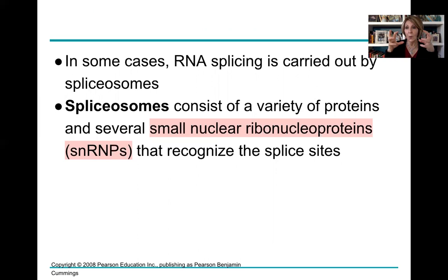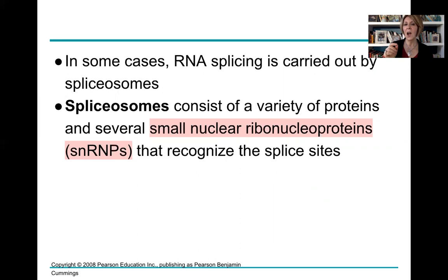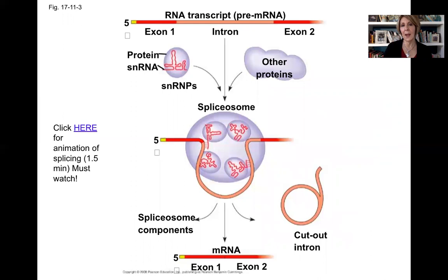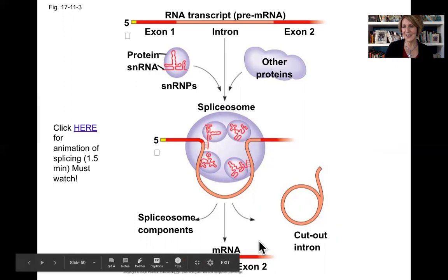RNA splicing is carried out by a large molecular machine called a spliceosome. A spliceosome is a hybrid of many proteins and special small nuclear ribonuclear proteins, or SNRPs/SNRNPs, that recognize the splice sites on the messenger RNA. The spliceosome cuts out the introns and splices together the exons, which are then expressed into proteins.